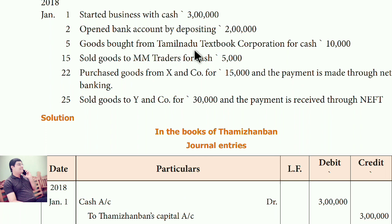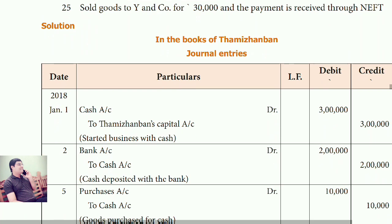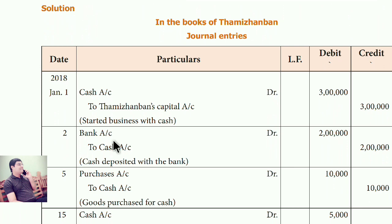Goods bought from Tamil Nadu Textbook Corporation for cash. You purchase the books for cash — what comes in, books come in; what goes out, cash goes out. So the entry is: Purchase account debit, to cash account. Cash goes out because cash is a real account, so it is credited. Purchase is a nominal account, so debit the expenses.